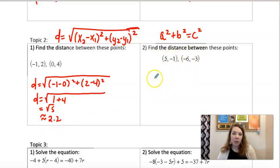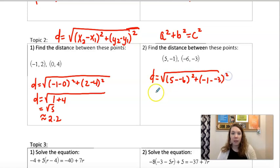And so, same thing here. You're going to have 5 minus negative 6 squared. Negative 1 minus negative 3 squared. So this would give us 11 squared is 121. This would give us 2 squared is 4.